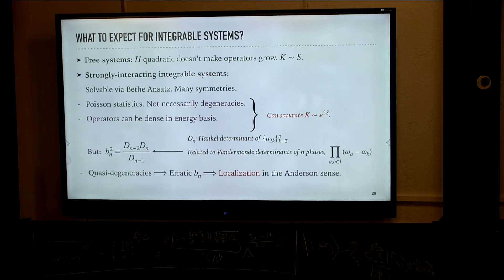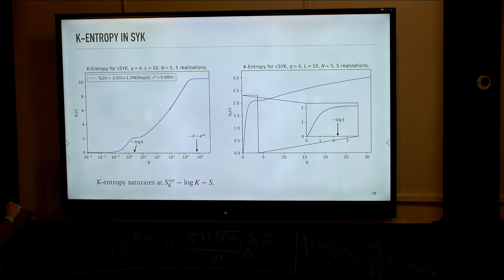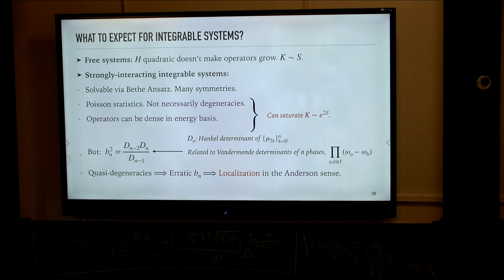So we managed to find the mechanism for saturation of complexity and how it is realized explicitly in a concrete system: it consists of a Lanczos sequence that actually decays slowly to zero, implying a wave packet that starts propagating towards the right and eventually reaches the end of a finite Krylov chain.